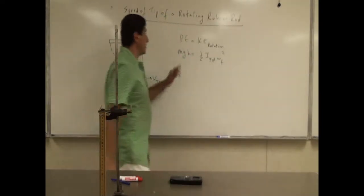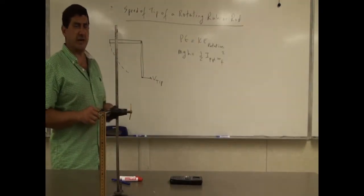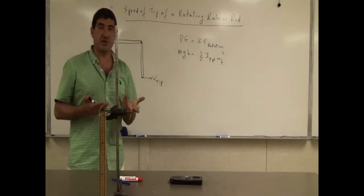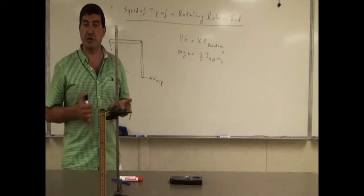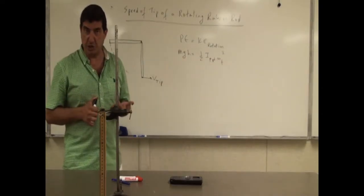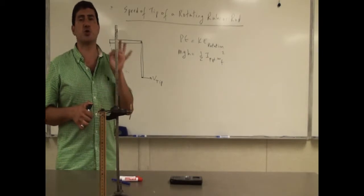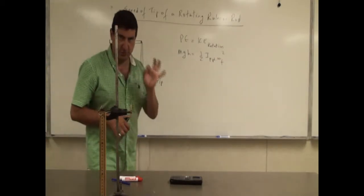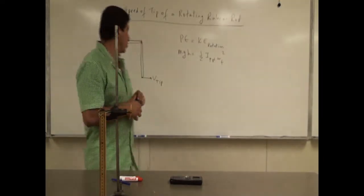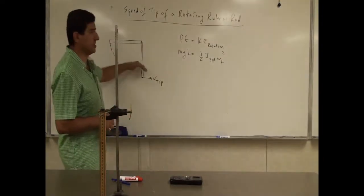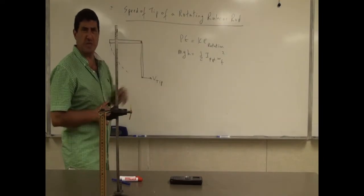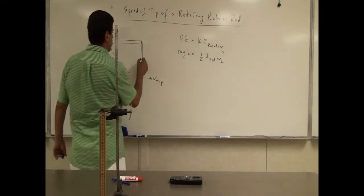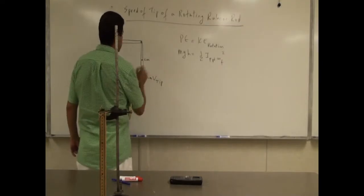In order to measure potential energy, we have to ask: where is the reference point of this ruler to measure its potential energy from? The reference point should always be the center of mass of the ruler, wherever the center of mass is. In this case, the ruler has uniform density, so the center of mass is right in the middle.